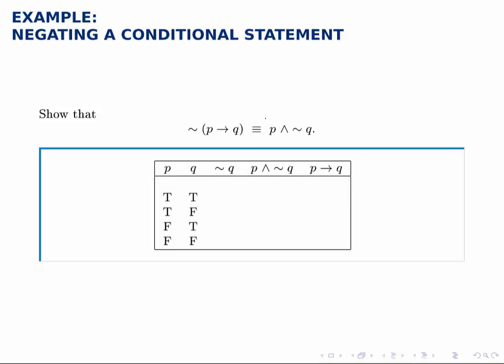So this is just showing symbolically something that we should understand intuitively. But just like before, to prove the two statements are equivalent, we'll build a column for each of them in the truth table and then show that those columns are identical.